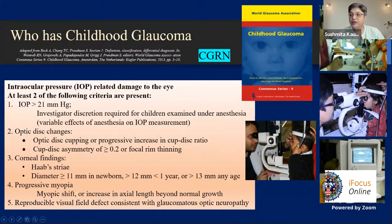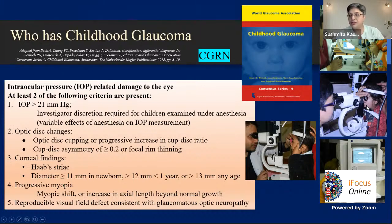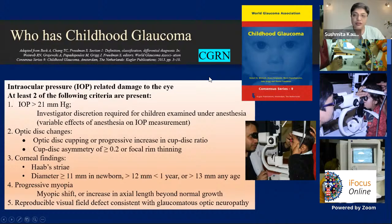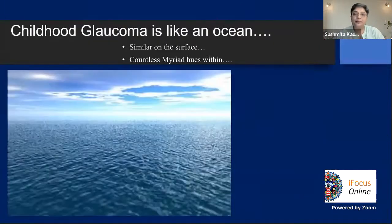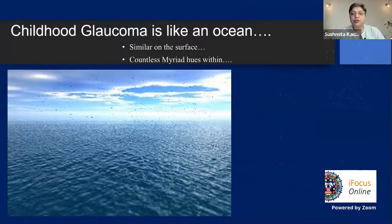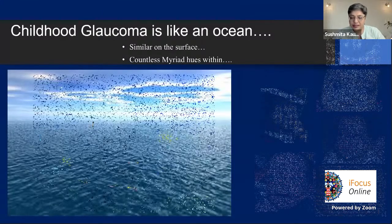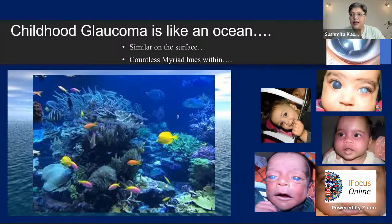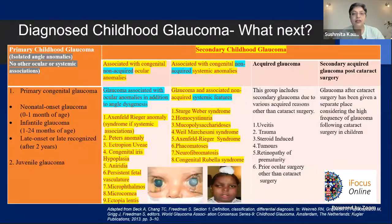These are young children in our clinic — you can do a lot with them. This child is about three years old allowing gonioscopy, and this one at two and a half is undergoing applanation tonometry. When you make friends with them, you realize you can do most things without anesthesia except for very small babies. Remember, childhood glaucoma is like an ocean — similar on the surface but with countless myriad hues within, and one size doesn't fit all.